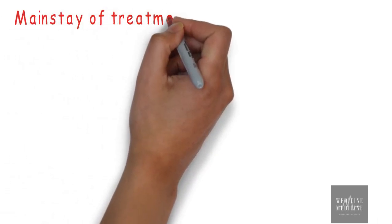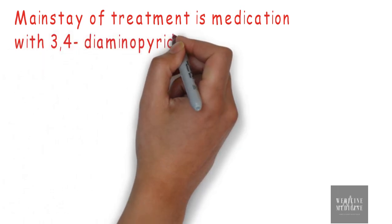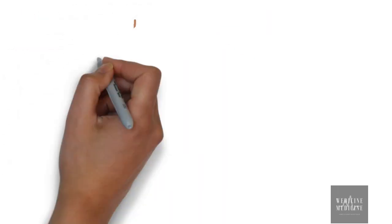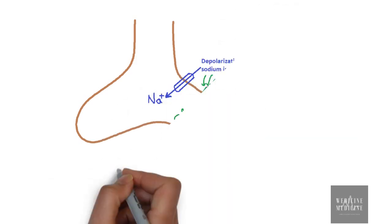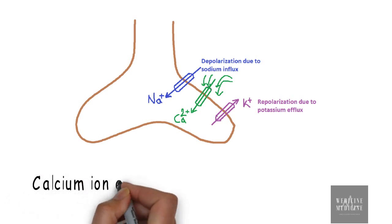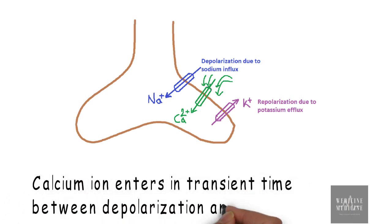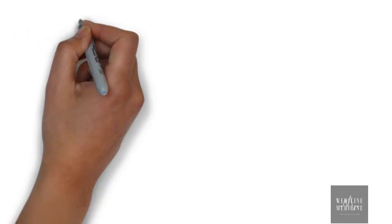The mainstay of treatment for Lambert-Eaton syndrome is medication with 3,4-diaminopyridine. Let's revise. Here you can see three different ion channels for sodium, calcium and potassium. Sodium influx causes depolarization whereas potassium efflux causes repolarization. Calcium ion enters in transient time between depolarization and repolarization.